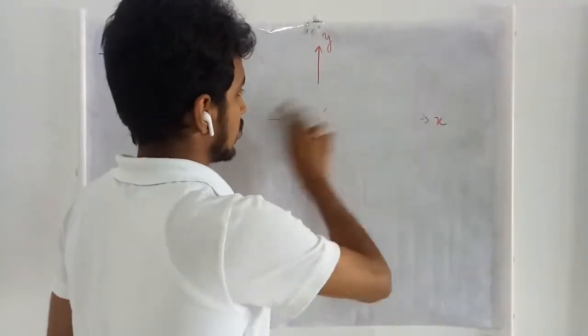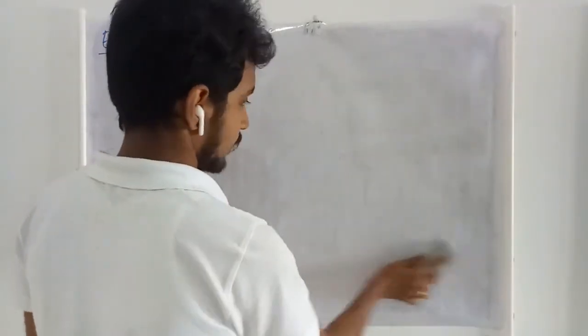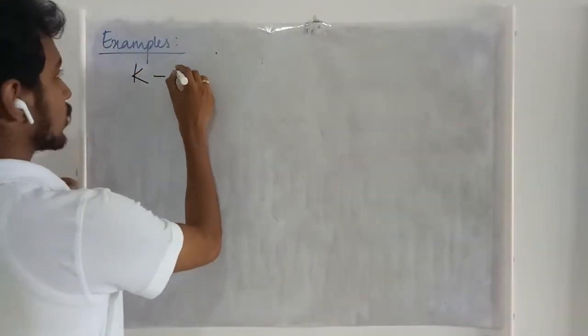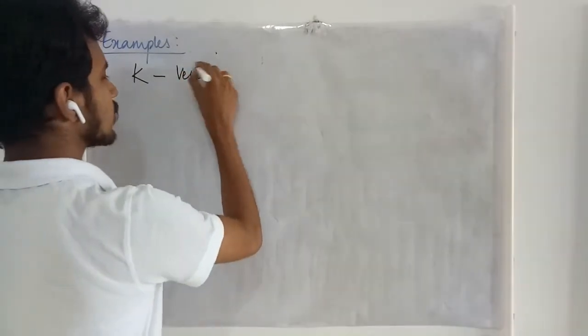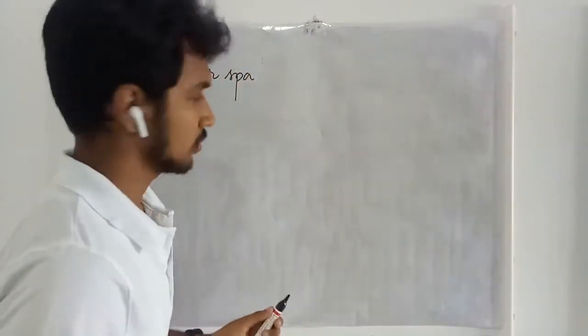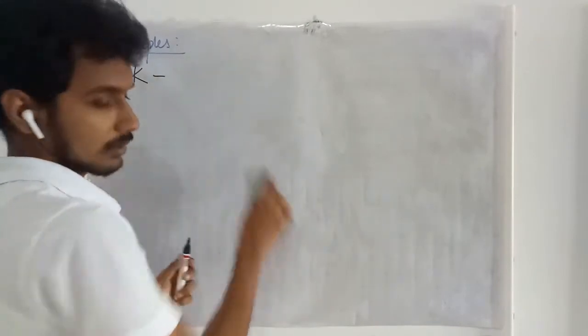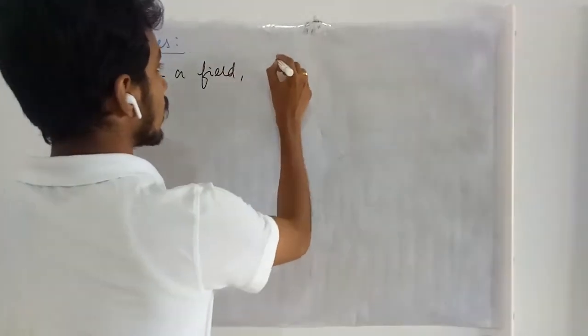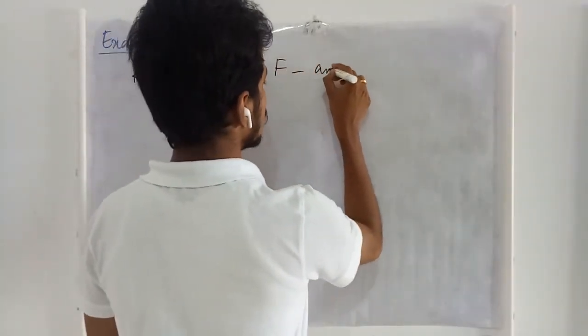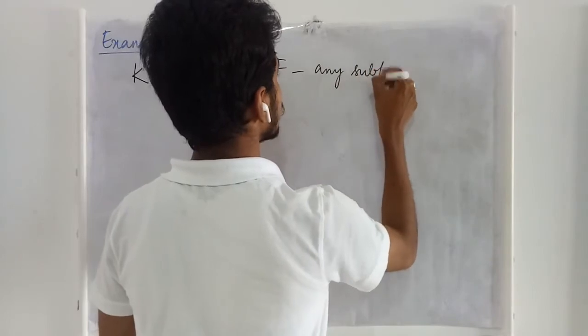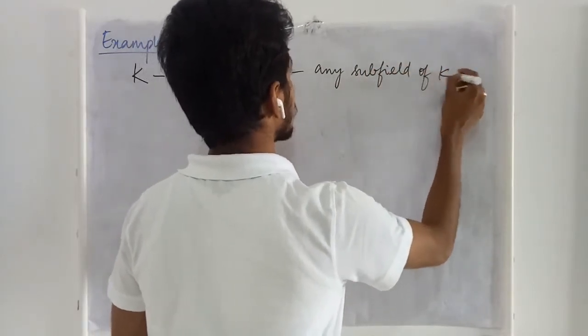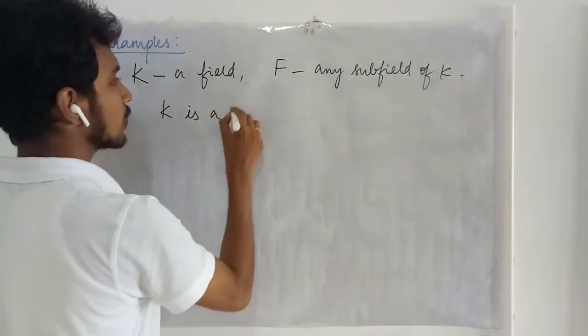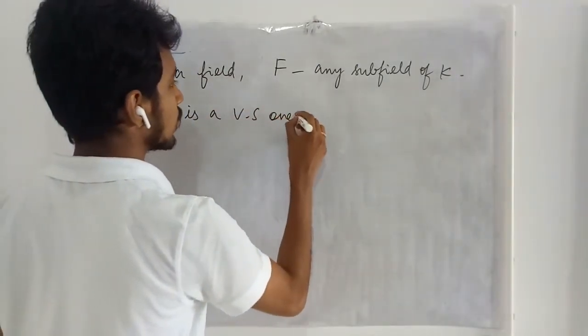Now let us formally get into some examples. So consider a field K. Then any subfield F of K. Then we may prove this K is a vector space over F.